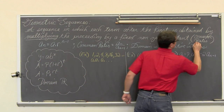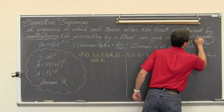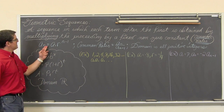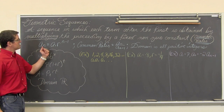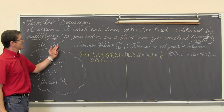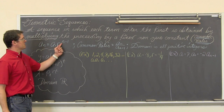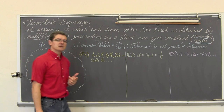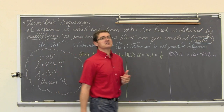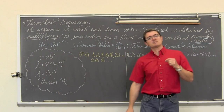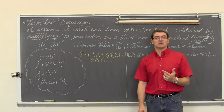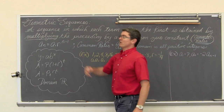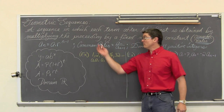We have a_n is equal to a_1 times r to the n-1 power. We have multiplication with the arithmetic sequences because multiplication indicates repeated addition. Exponents are for repeated multiplication.